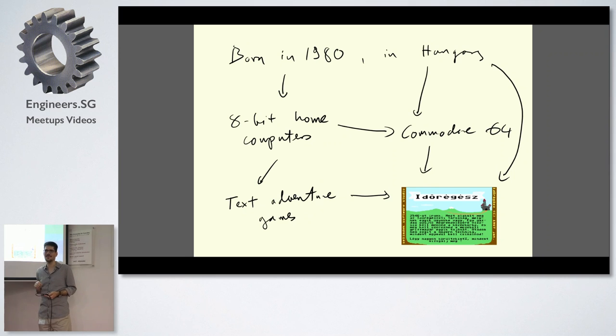If you grew up on 8-bit home computers, text adventure games were all the rage. For anyone who doesn't know what a text adventure game is, it's basically one where you read text which tells you your surroundings and situation and then you type in some command of what you want the protagonist to do. These were really big on 8-bit computers, and if you had a Commodore 64 in Hungary, there was one particular game which was the first professional grade text adventure game and this was quite a big thing.